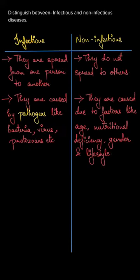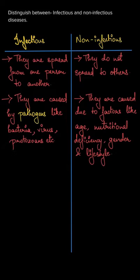Hello students. In this question, we have to write the differences between infectious diseases and non-infectious diseases. Infectious diseases are the diseases that spread from one person to another person, while non-infectious diseases do not spread to others.